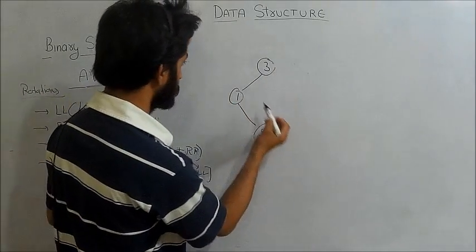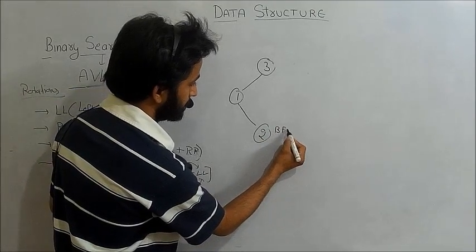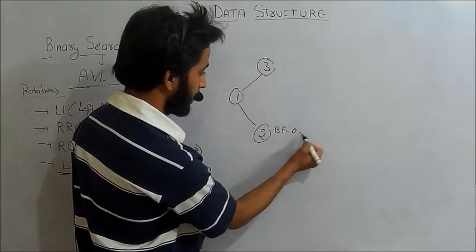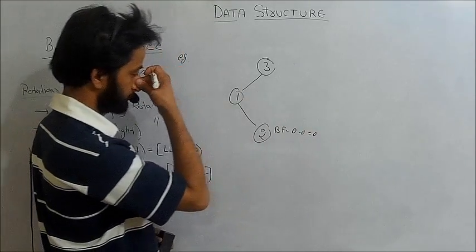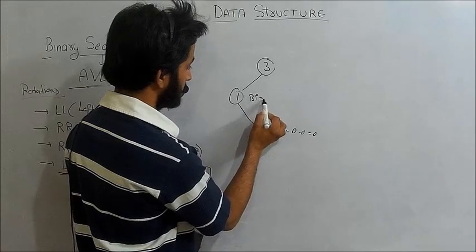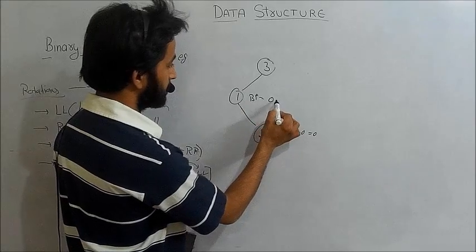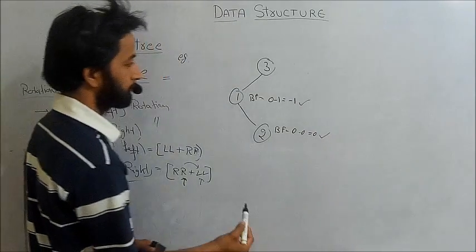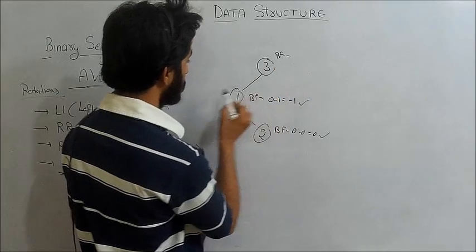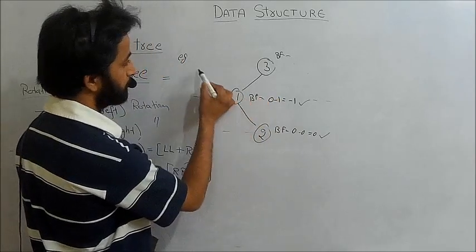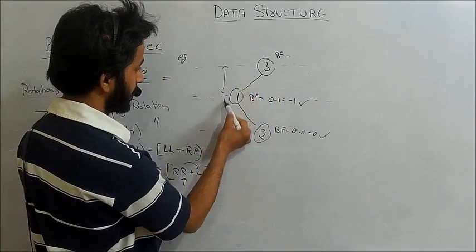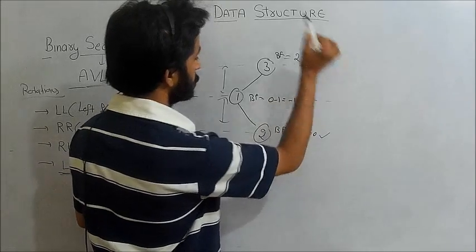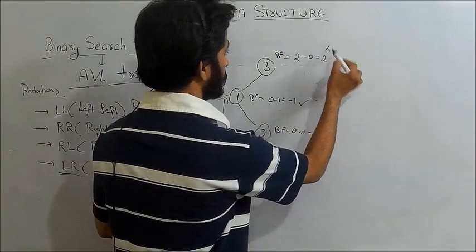In this tree, the balance factor at one node is zero to the right and zero to the left, so balance factor is zero. At the next level, balance factor is zero to the left and one to the right, so minus one — that is okay for AVL tree. But at the top node, height to the left is two and to the right is zero, so balance factor is two.